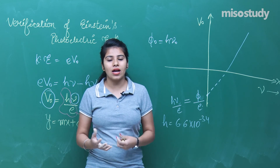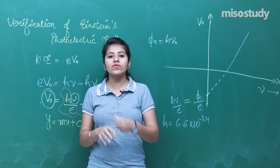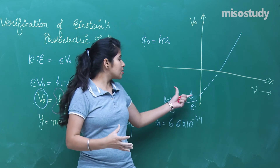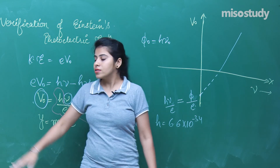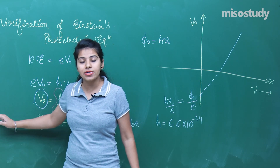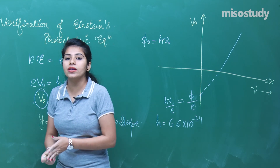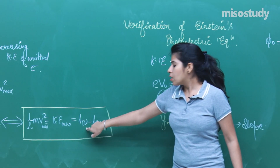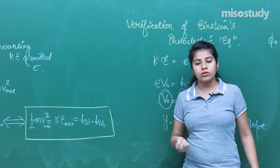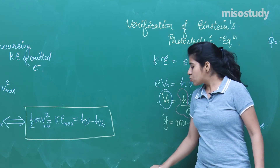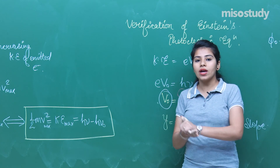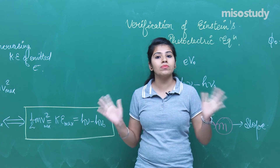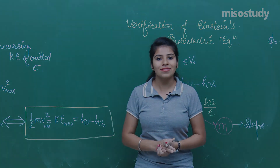This equation can be used to find the velocity of emitted electrons, the frequency, or the energy of the emitted electron. After learning about this, we should wrap up this session. In the next session, we will be continuing with the same topic. Till then, just take care. Thank you.